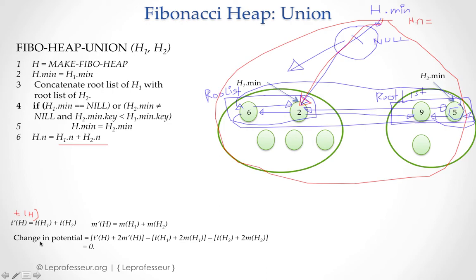H will have the root nodes in the root list of H1 plus H2, so t(H1) plus t(H2). In the same way we can check the marked nodes. H1 may have marked nodes and H2 may have marked nodes. We just add them together and get the marked nodes for the final heap. And what would be our change in potential? Simply the potential of the final heap minus potential of H1 and potential of H2. Now if we put all these values in this equation, what's going to happen? We put the value of t(H), that is t(H1) plus t(H2), that will cancel out t(H1) and t(H2). In the same way when we put the value of m(H), 2 times m(H), it will cancel out 2 times m(H1) and 2 times m(H2).